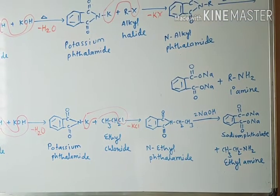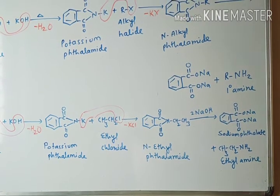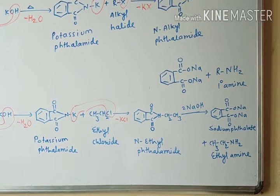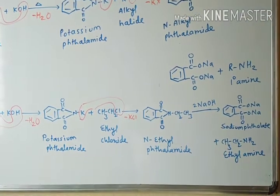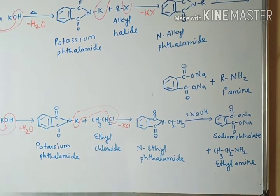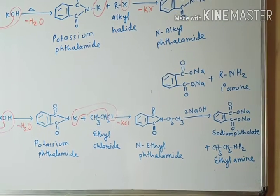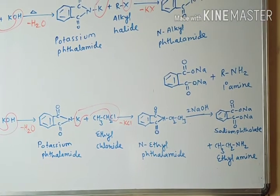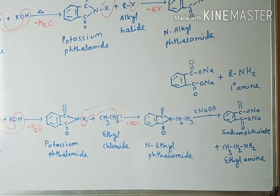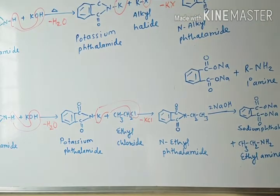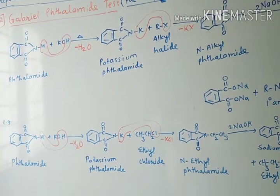KCl is formed, and there is formation of ethyl group attached to the nitrogen, so the compound becomes N-ethyl phthalamide. This N-ethyl phthalamide is further hydrolyzed by NaOH to form sodium phthalate and ethyl amine.